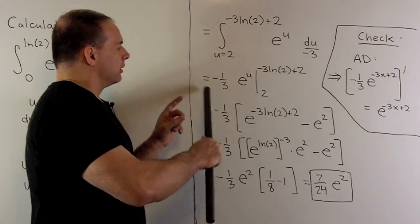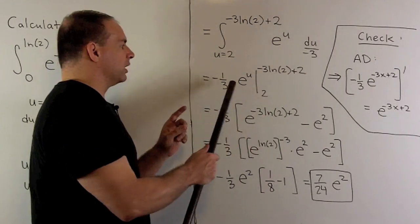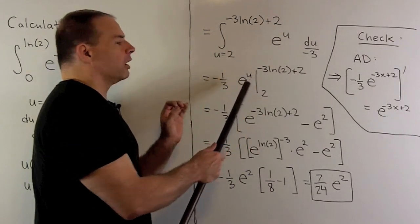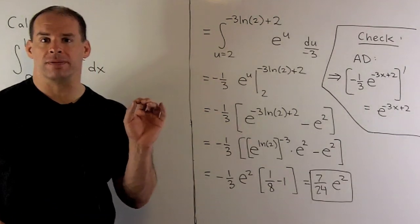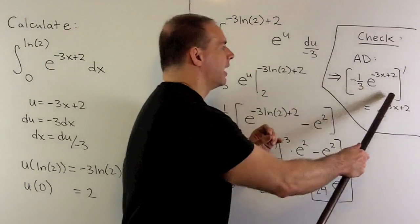So I want to take this term here, our minus 1 third e to the u. We'll put in our minus 3x plus 2 in for u. And then, take the derivative.